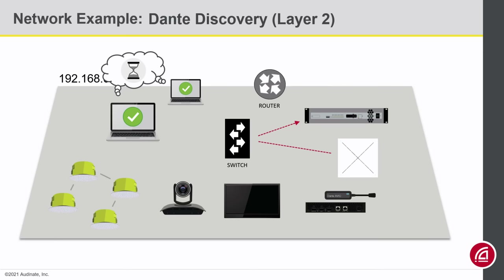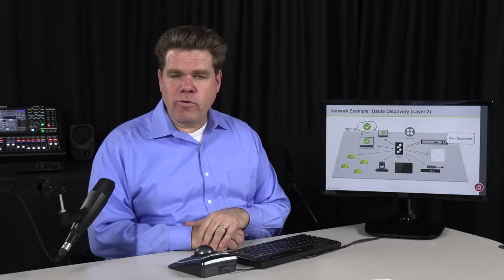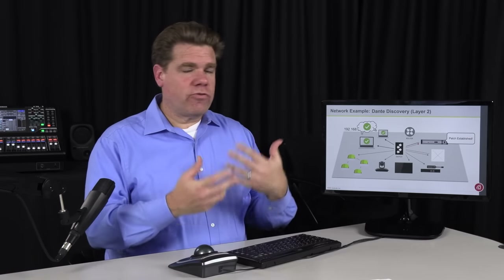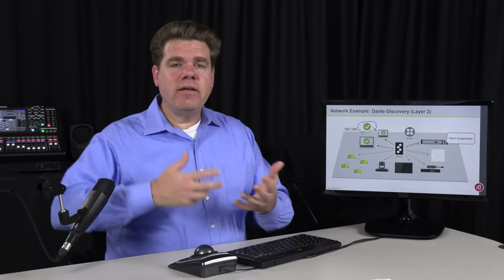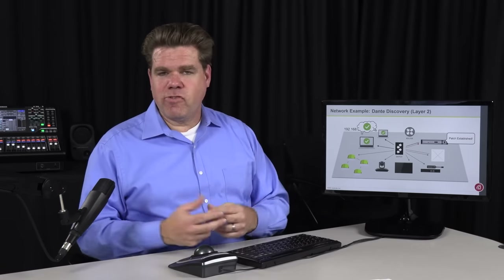That device will then start sending the Dante stream. Once that's running, the DSP will send one more update that the stream is all good. When Dante Controller sees that, it will replace the hourglass with a green check mark. So that's a detailed view of how this works through discovery, creating a subscription, and so on.